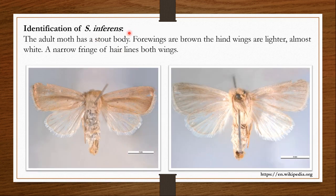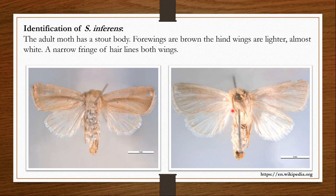To identify Sesamia inferens, you can look at its colour, which is dull. The forewings are brown and the hind wings are white. The thorax can also be white. A narrow fringe of hair lines both the wings. If you look from the dorsal side, you may not be able to see its head, which is often bent downwards. But from the ventral side, you will see the head with two very prominent black compound eyes and well-developed labial palps. The females have simpler antennae and the males have more elaborate antennae.